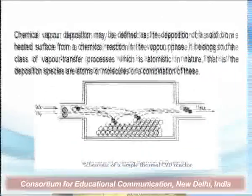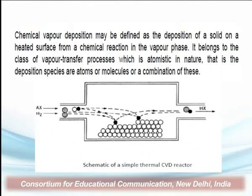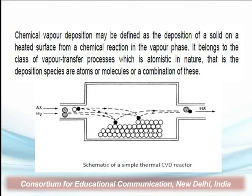In this process, you can see in the diagram that the material passes into the chamber and is deposited. Chemical vapor deposition may be defined as the deposition of a solid on a heated substrate from a chemical reaction in the vapor phase. It belongs to the class of vapor transfer processes and is atomistic in nature, as we are talking about atoms and molecules — the deposition species, atoms, molecules, or combinations of these.